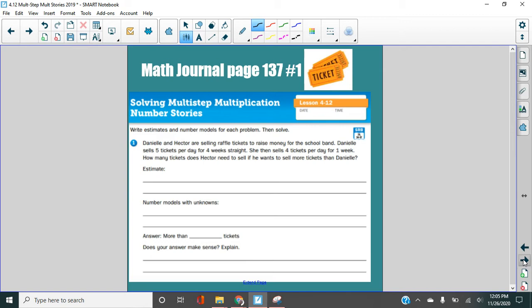Danielle and Hector are selling raffle tickets to raise money for the school band. Danielle sells five tickets per day for four weeks straight. Then she sells four tickets per day for one week. How many tickets does Hector need to sell if he wants to sell more tickets than Danielle? All right. Let's make sure we understand our ultimate goal. What's our goal here? We need to find the number of what? We have to find the number of tickets Hector needs to sell if he wants more than Danielle, right? So we're going to need to first figure out how many Danielle sold. So what do we know here?